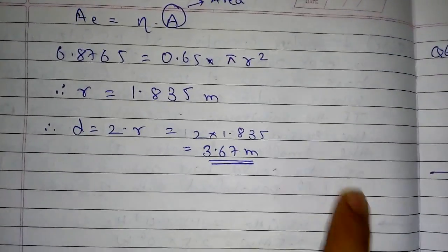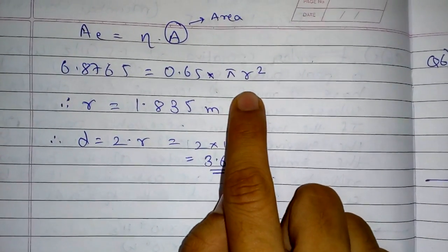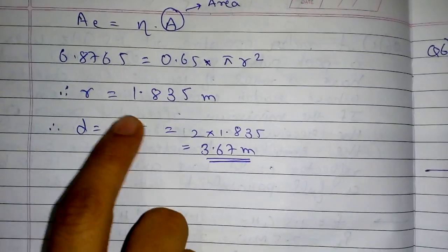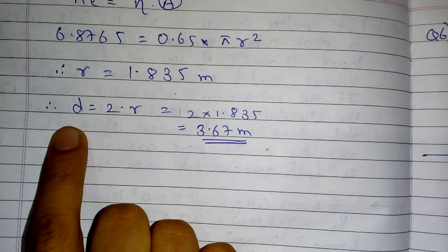Area, since this is antenna it will be a paraboloid as given, but we can assume the area to be πr squared. So with this we get r equal to 1.835 meters.